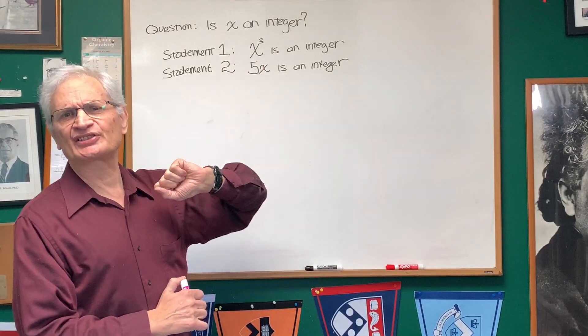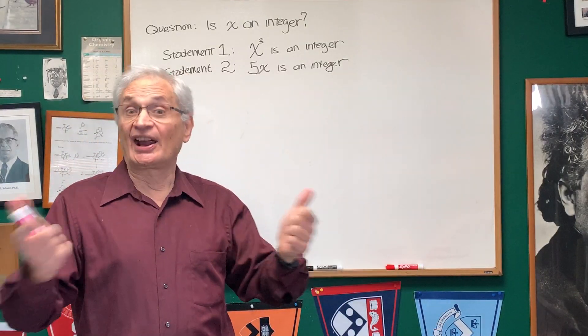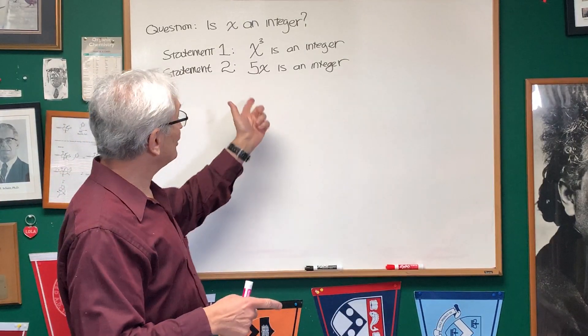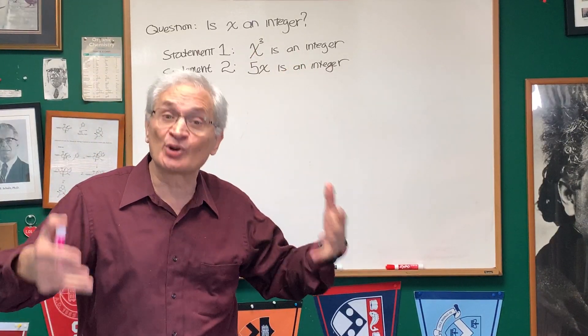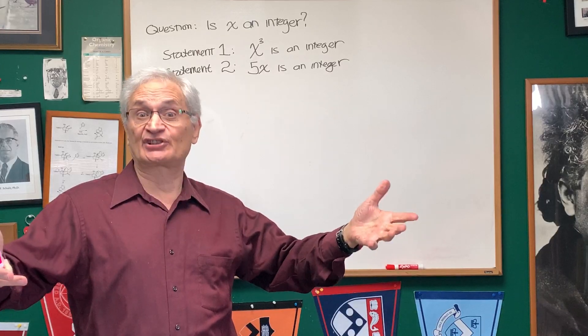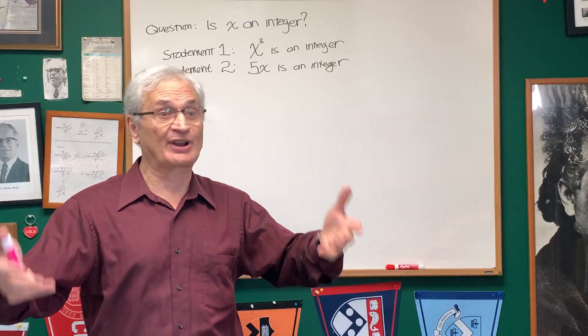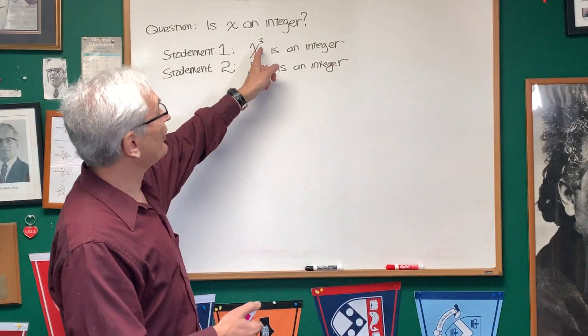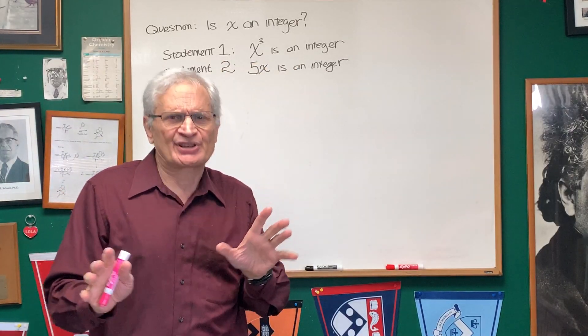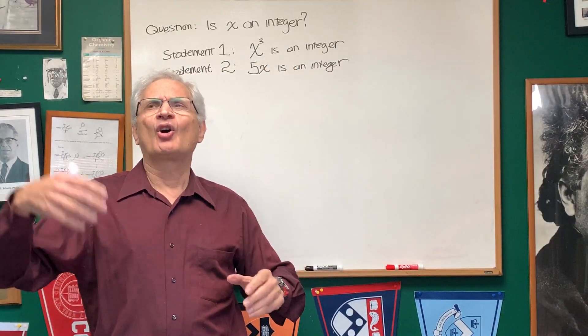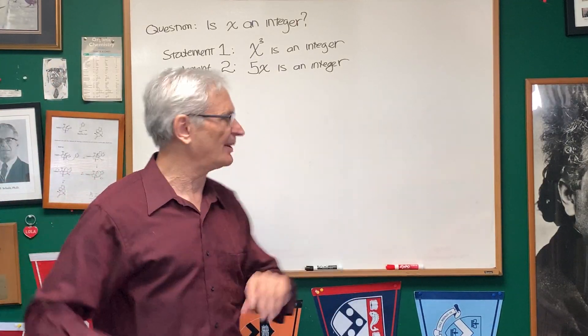Let's examine each one. x³ is an integer. What set of numbers does that describe? It describes integers—an integer to the third power is an integer—but it also describes the cube root of integers that are irrational numbers, like the cube root of 2, 3, or 4. Those to the third power are integers. So from statement one, it's ambiguous as to whether x is an integer or one of those irrational cube roots of an integer.